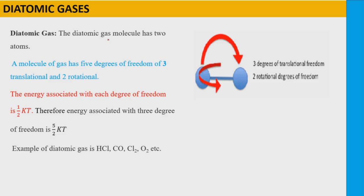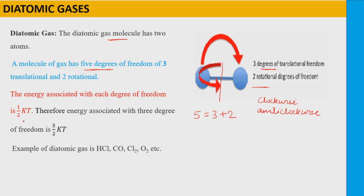In the case of diatomic gas, it has two atoms per molecule. These two combined atoms forming a molecule can have three degrees of translational freedom and two degrees of rotational freedom. If this is the axis along which it can rotate, there can be clockwise or anti-clockwise rotation, giving two rotational degrees of freedom. So in all, a diatomic gas has five degrees of freedom — three translational and two rotational. The energy associated with each degree of freedom is half kT, and the total energy associated is 5/2 kT. Examples of diatomic gas are HCl, carbon monoxide, chlorine, oxygen, and hydrogen.